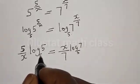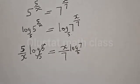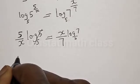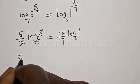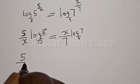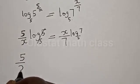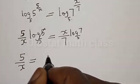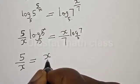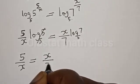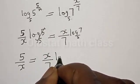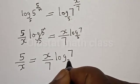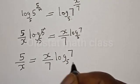Now log 5 base 5 equals 1, so we cancel that. We have 5 divided by x is equal to x divided by 7 times log 7 base 5.